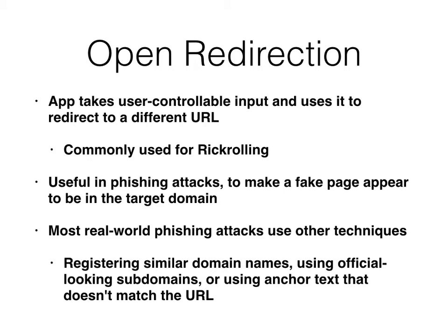This is commonly used for rickrolling — someone clicks on a link and ends up watching an annoying video. You can use it in a phishing attack. If Amazon had an open redirect, you can make a real Amazon link that goes to Amazon and then to a fake Amazon, and they might not notice. But in practice, nobody bothers, because people are so helpless you don't really need to be that sneaky. You can just make a domain name that looks like Amazon, like amazon.paymentsecure.com — that's usually what real phishing links are.